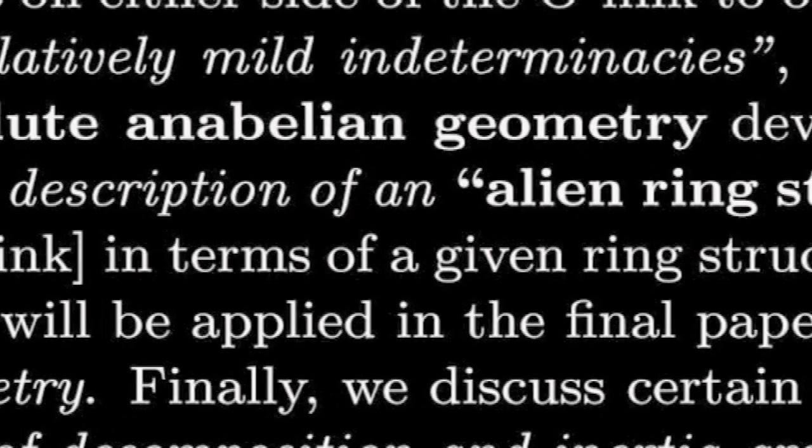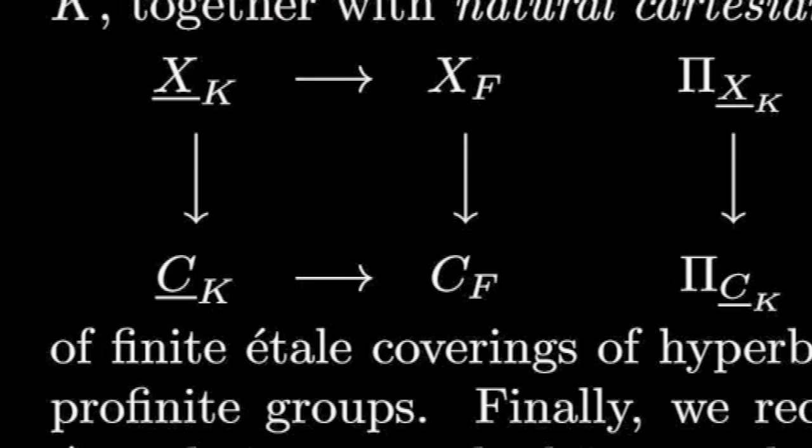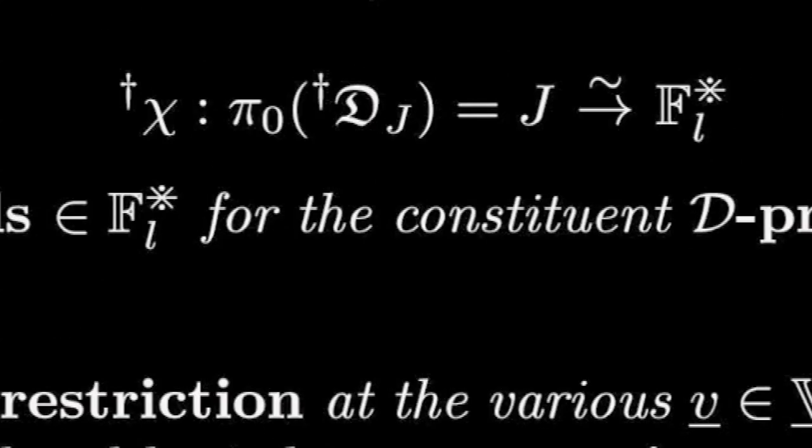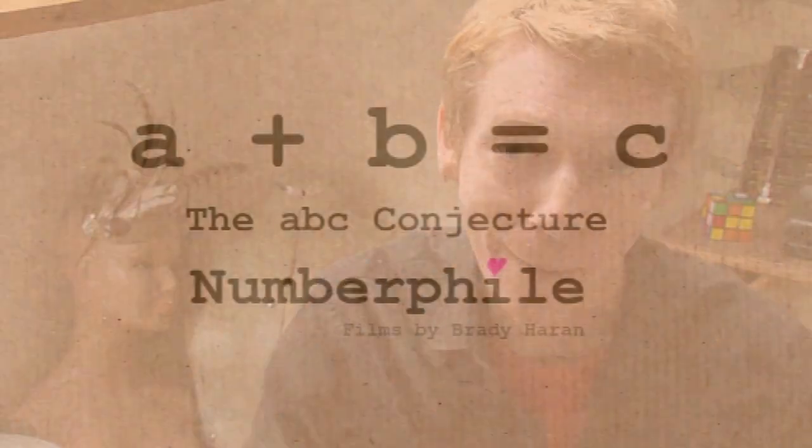We don't know if this proof is right yet. A Japanese mathematician called Motizuki has released these papers, and altogether it's 500 pages long. He's been working on this for a very long time. He's come up with his own theory of maths, a whole new body of maths, and he's called it inter-universal geometry. I know nothing about that. Very few people do. Even the experts don't know much about this at the moment, so it's going to take a very long time to make sure if the proof is right, because they're going to have to learn this whole new theory of mathematics.